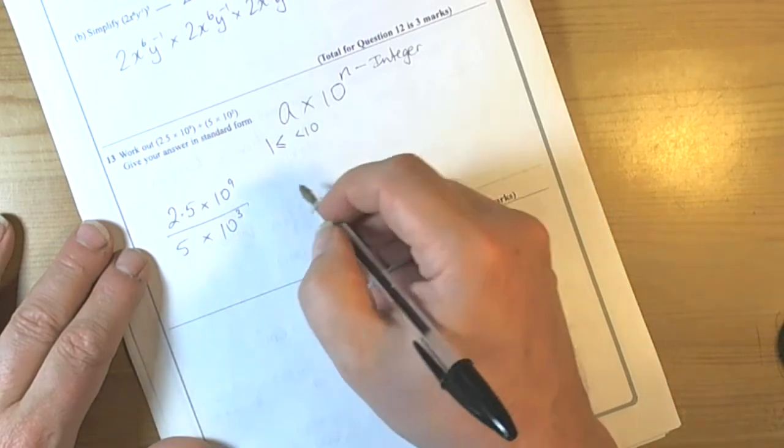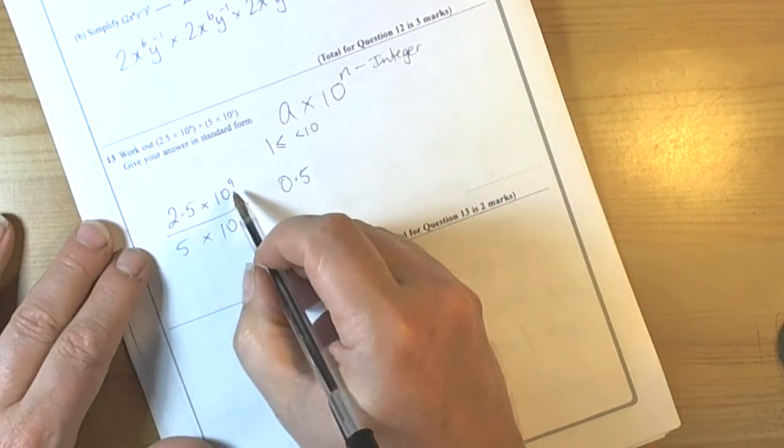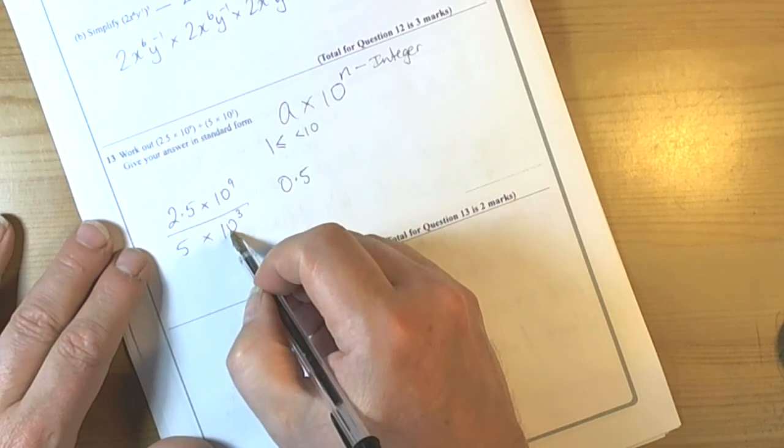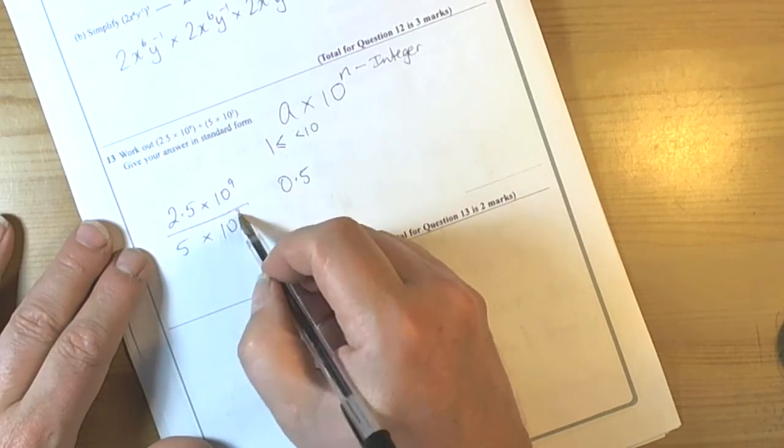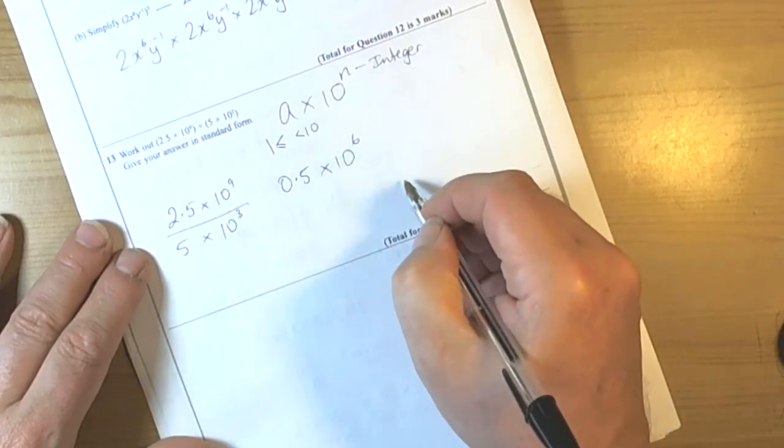So we've got 2.5 divided by 5, which is 0.5. We've got power 9 and power 3. We've been in division. The rule says we take away those powers, so that would be 10 to the power of 6.